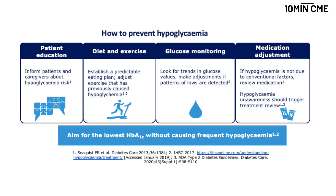Another important point before closing is hypoglycemia. Patients should be educated about the symptoms of hypoglycemia whenever we start insulin. Hypoglycemia is defined as plasma glucose values less than 70 mg/dL. Clinically significant hypoglycemia is a value less than 54 mg/dL, and severe hypoglycemia is a situation where there is additionally alteration in mental status and the patient requires assistance for treatment.